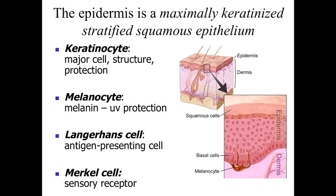Looking at the epidermis, we said it would be a maximally keratinized stratified squamous epithelium — many cell layers thick, with flat squamous surface cells and maximal keratin. There are lots of keratin intermediate filaments providing strength to these cells. It's also important to recognize that the surface cells, closest to the outside of the body, are essentially dead. They are remnants of cells still packed with keratin to give them strength and resistance.